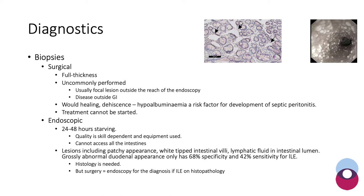Interestingly, the white-tipped intestinal villi or lymphatic fluid visible endoscopically — the patchy, grossly abnormal duodenal appearance — only has a 68% specificity and 42% sensitivity for intestinal lymphangiectasia. So even in cases where you cannot see white-tipped intestinal villi or lymphatic fluid, you could still have significant intestinal lymphangiectasia.